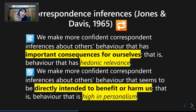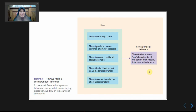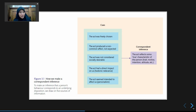The fifth principle is personalism: if the behavior is intended to directly harm or benefit us personally, we will make an even more confident judgment about the inference. This is closely related to hedonic relevance. This diagram explains how we make inferences based on these five principles — the more a behavior fulfills these principles, the more confident we are that the behavior reflects the actor's internal traits.